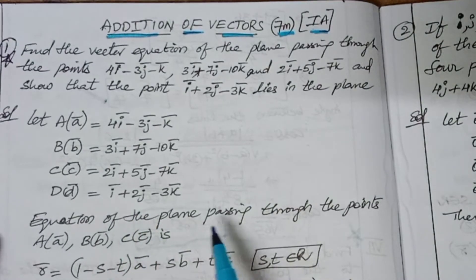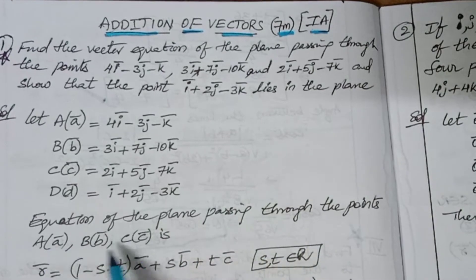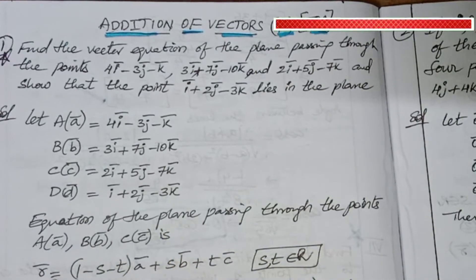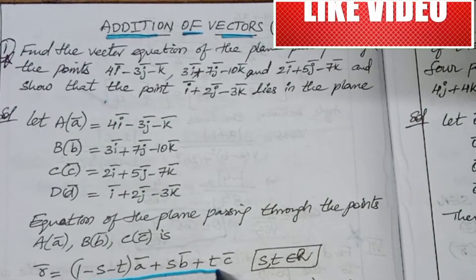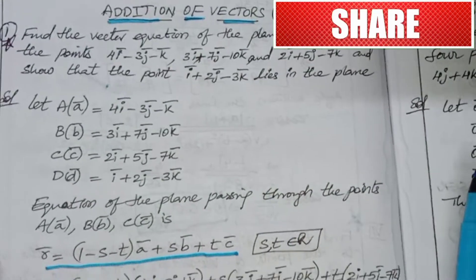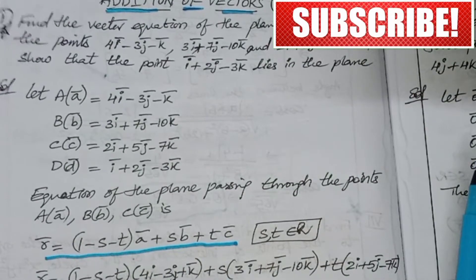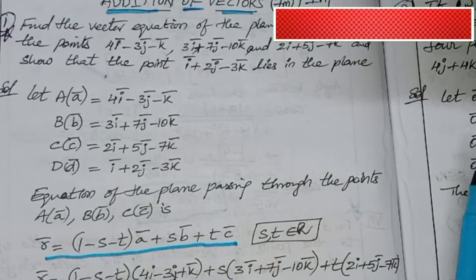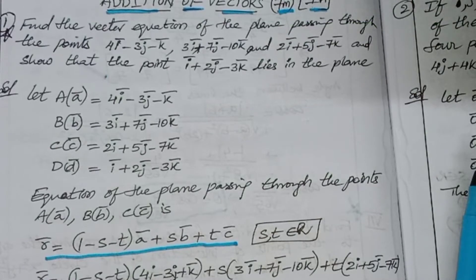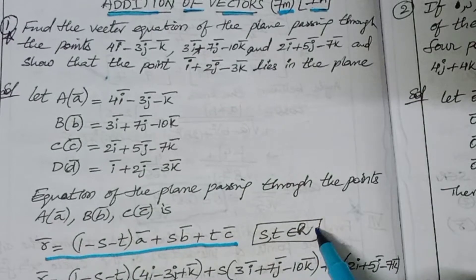We have to find the equation of a plane passing through the points a, b, c vectors. The equation of a plane passing through points a, b, c is: r-bar = (1 minus s minus t) times vector a, plus s times vector b, plus t times vector c, where s and t belong to real numbers.